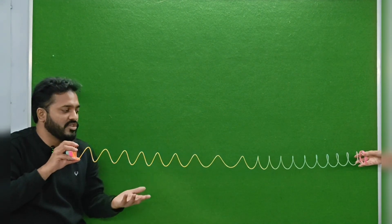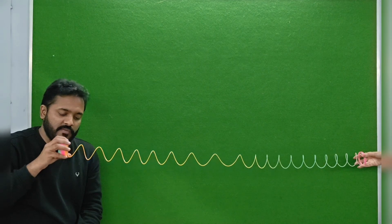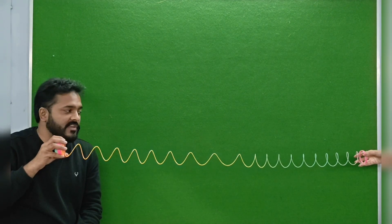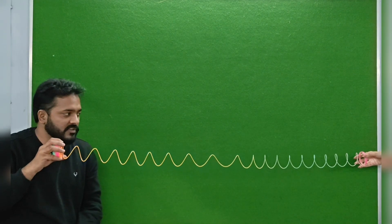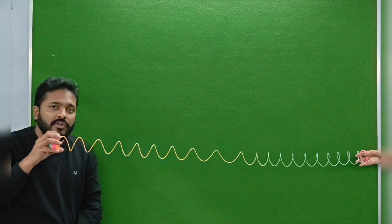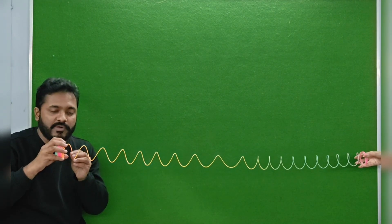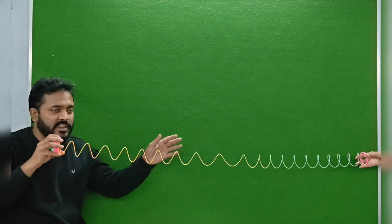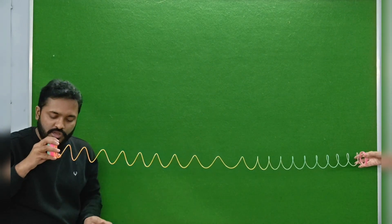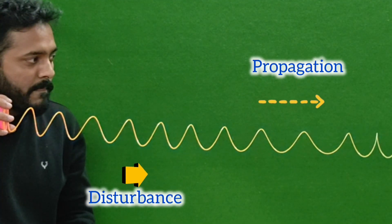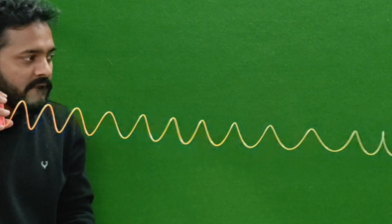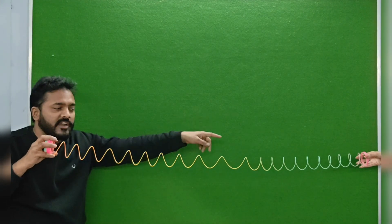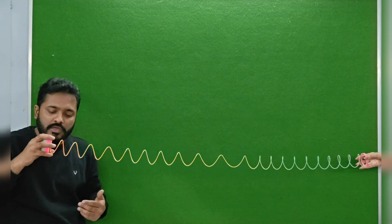Here we have a coiled arrangement of a spring. If I release a pulse from one end, it will travel as a compression wave in this direction and then reflect back. The wave pulse we saw traveling is an example of a compression wave, and the wave is traveling in the direction of disturbance.